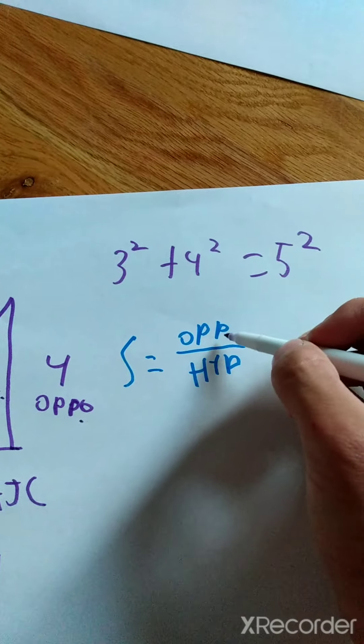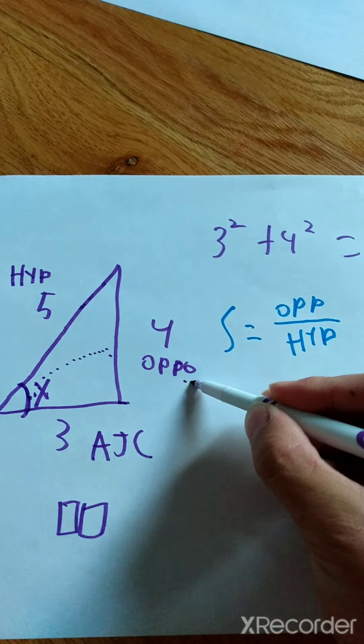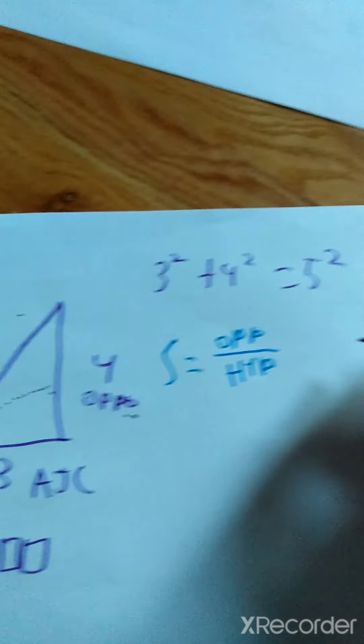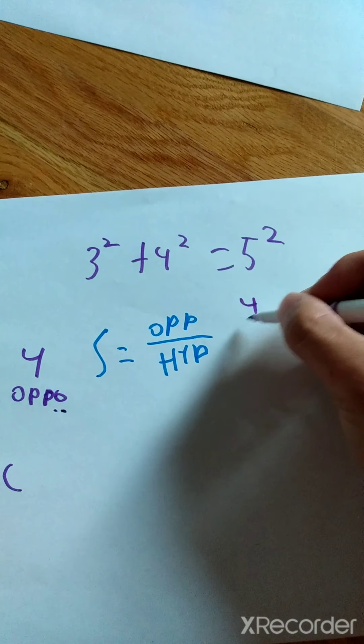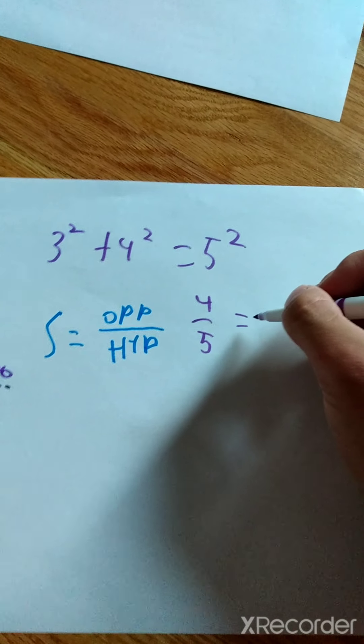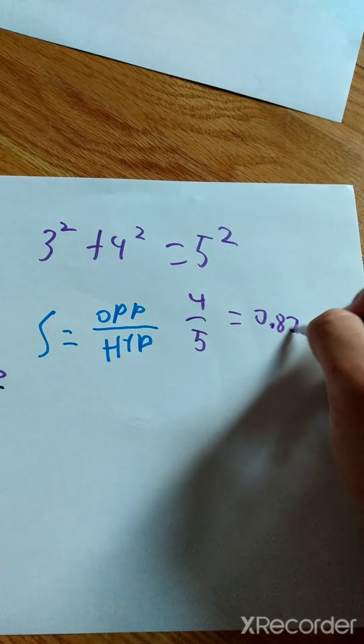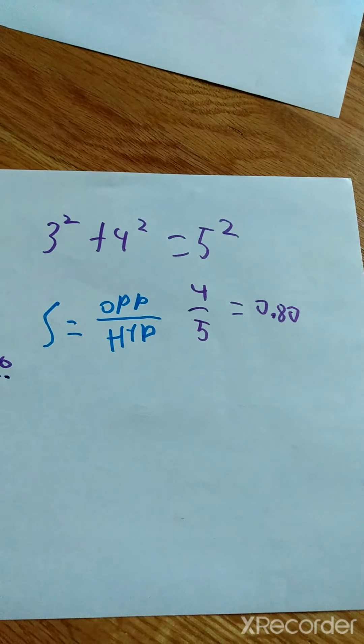With sine, it's going to be the opposite divided by the hypotenuse. So it's going to be 4 divided by 5. And if you want that as a decimal, you're going to get an answer of 0.80. That's what sine is.